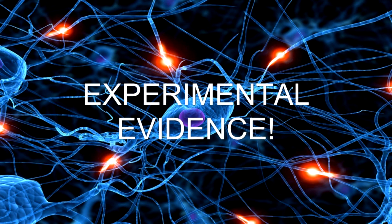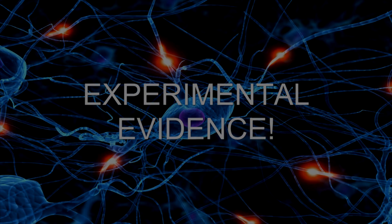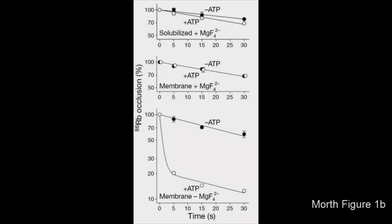Now we're going to discuss the experimental data found within the Morth paper. These graphs from Figure 1 depict the preparation experiments to set up the crystallization process. The bottom graph has the ATPase in the membrane with rubidium present and no magnesium tetrafluoride. The results are consistent with that of potassium, verifying that rubidium is a valid substitute for potassium.